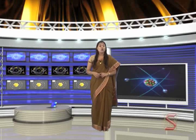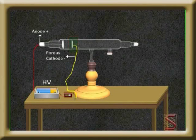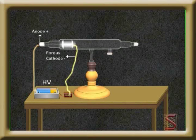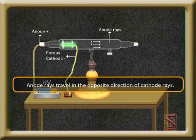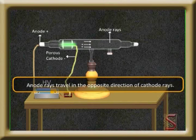So far we discussed about the cathode rays. Let us now see how the anode rays are discovered and also its properties. Like J.J. Thompson, Goldstein also carried out similar type of discharge tube experiments. He used a porous cathode tube and found that certain rays were travelling from anode to cathode, in the opposite direction to cathode rays. These rays were named as anode rays or canal rays.